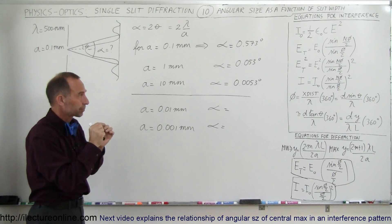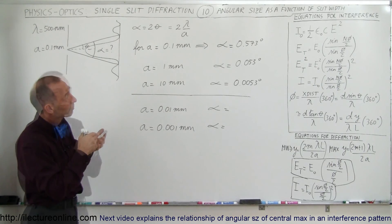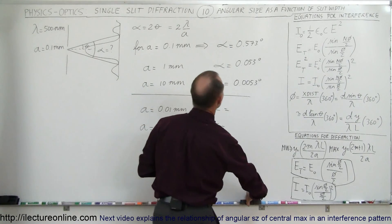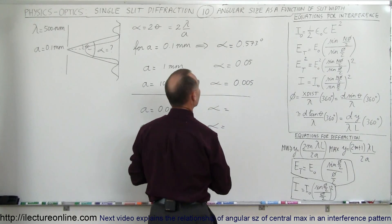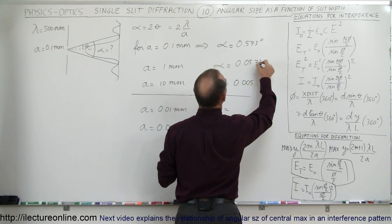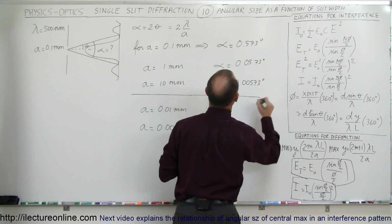Where you can no longer see the diffraction pattern. It'll be 0.073 degrees... I just noticed that we made a mistake here, so this should be 0.573 degrees. I forgot my zero, 0.0573 degrees, there we go.